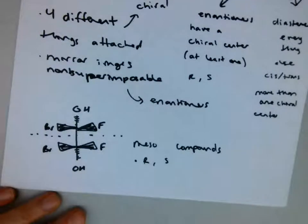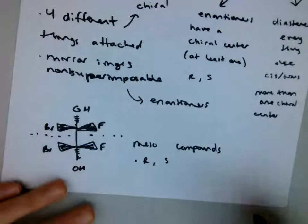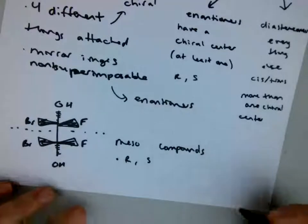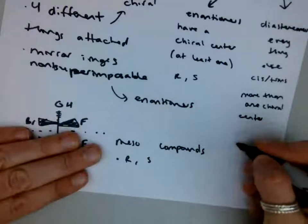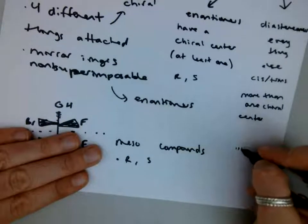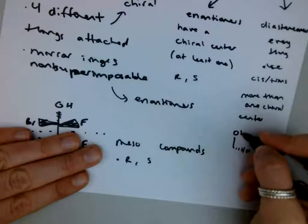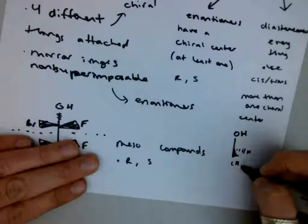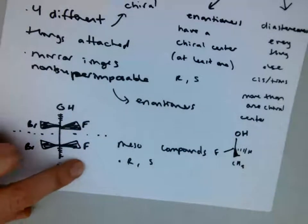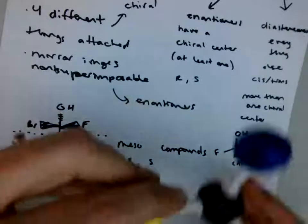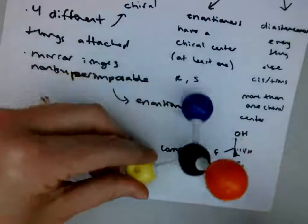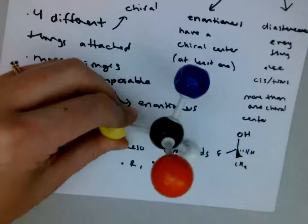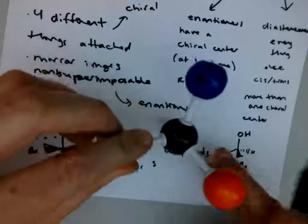So the biggest thing is in assigning priorities, you're going to go based on molecular weight. And then you want to make sure your lowest priority is in the back. So let's just take this molecule, for example. I'm going to simplify it. We had something that looks like this. So this can be our molecule, our example. The H is going into the page. The CH3 is coming out. Here's an OH on top and a fluorine over here. I just randomly assigned these colors.